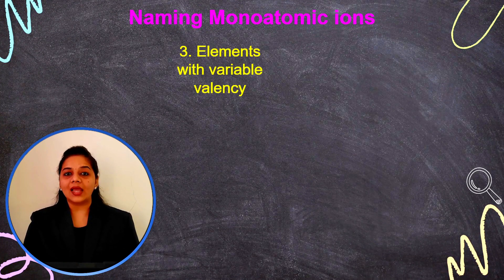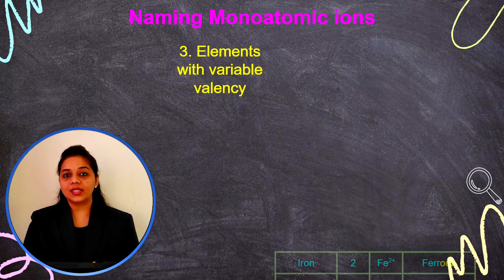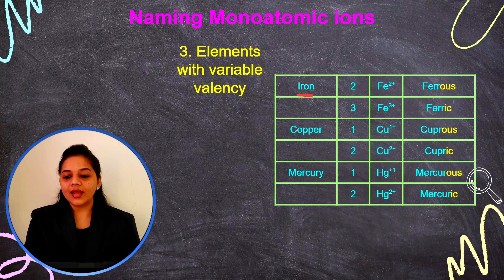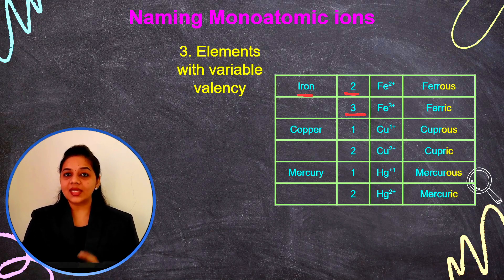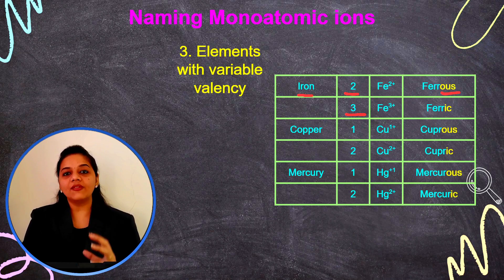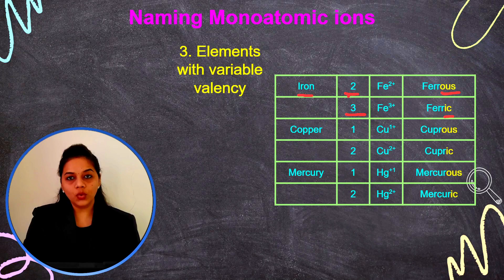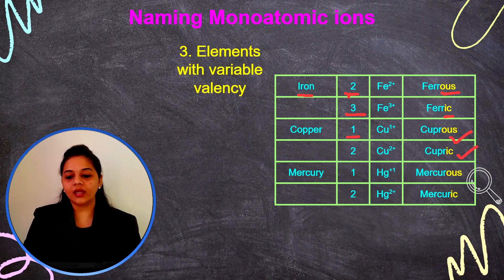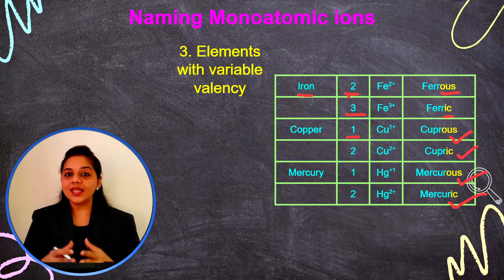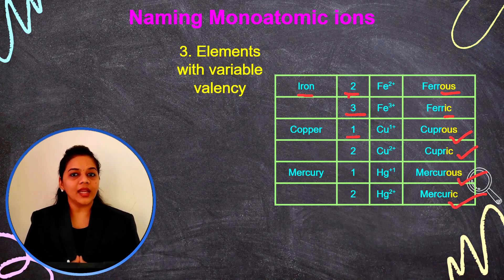Now let's look at how monoatomic ions with variable valency are named. Iron has two valencies: 2 and 3. If the valency is lower, we add '-ous' as the suffix; if the valency is higher, we add '-ic' as the suffix. So valency 2 gives ferrous, and valency 3 gives ferric. For copper: cuprous and cupric. For mercury: mercurous and mercuric. This is how all monoatomic ions with variable valency are named.